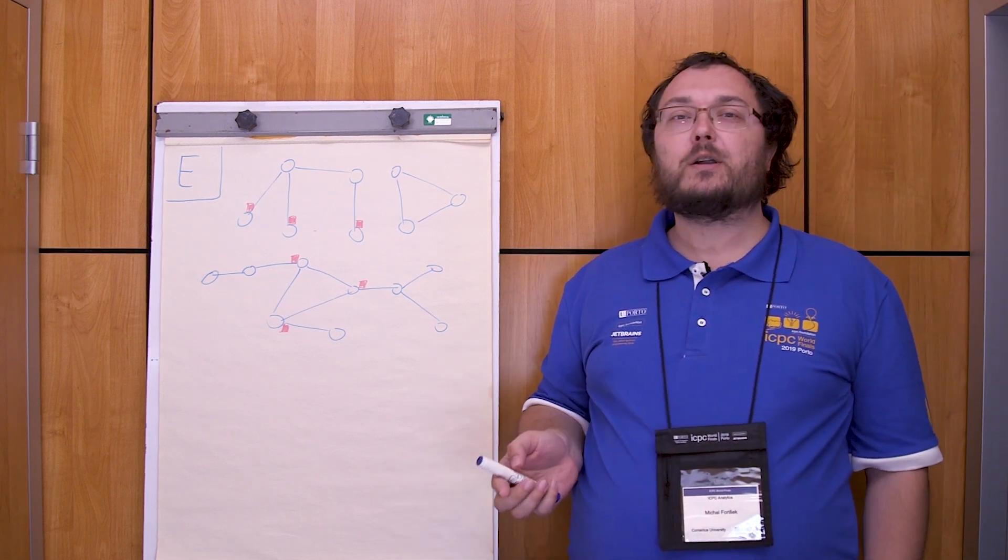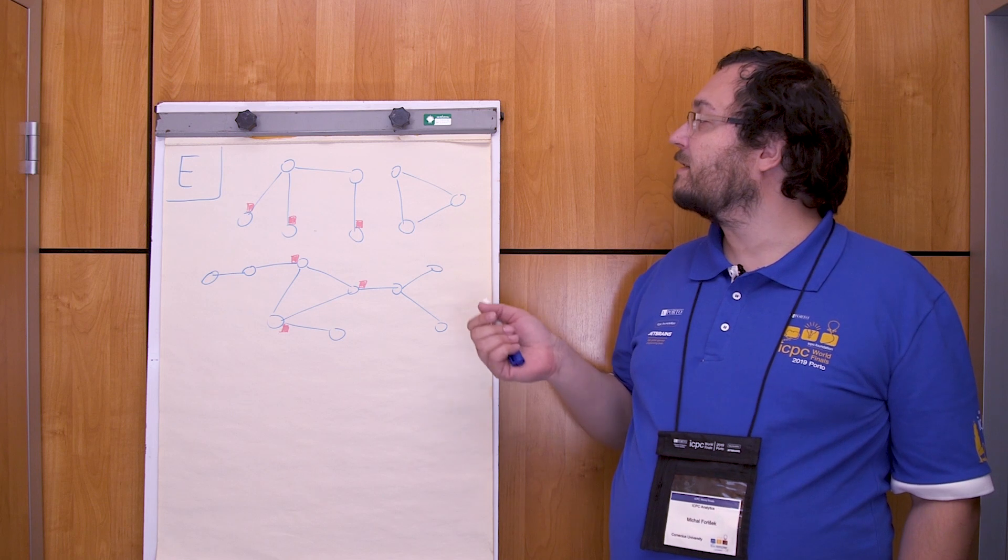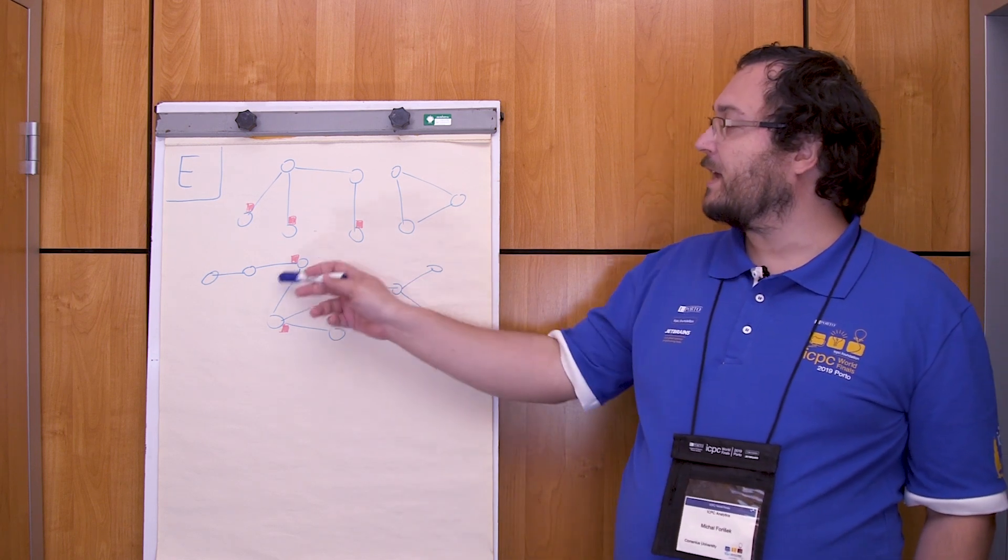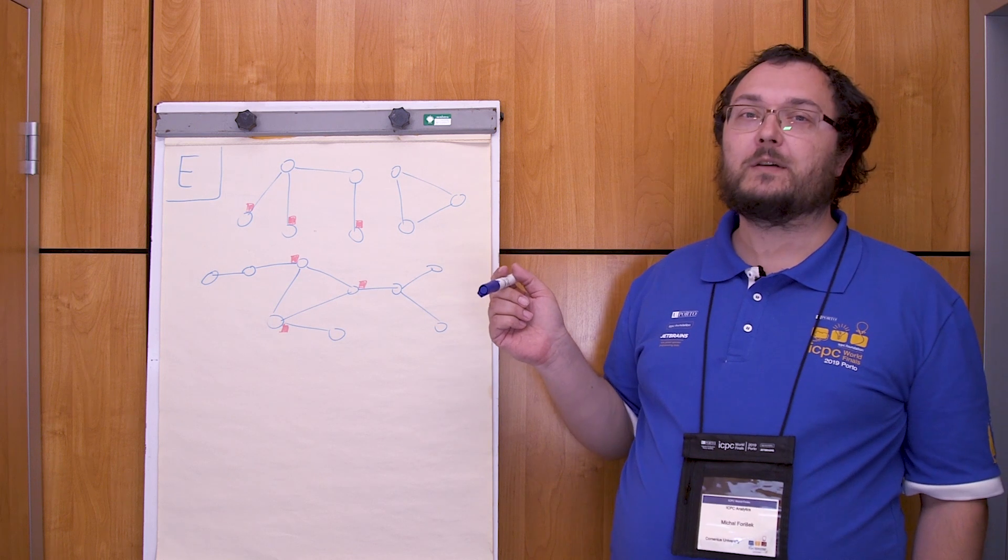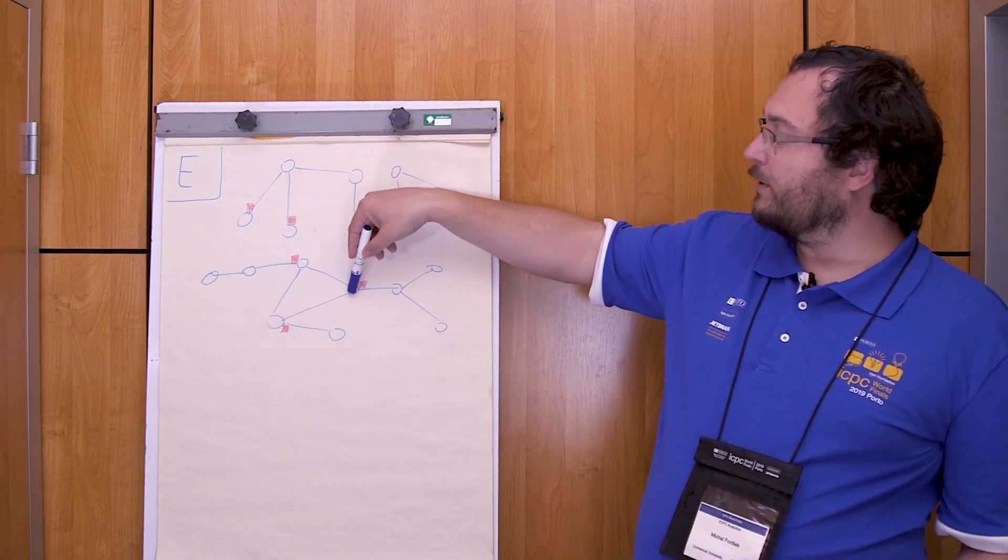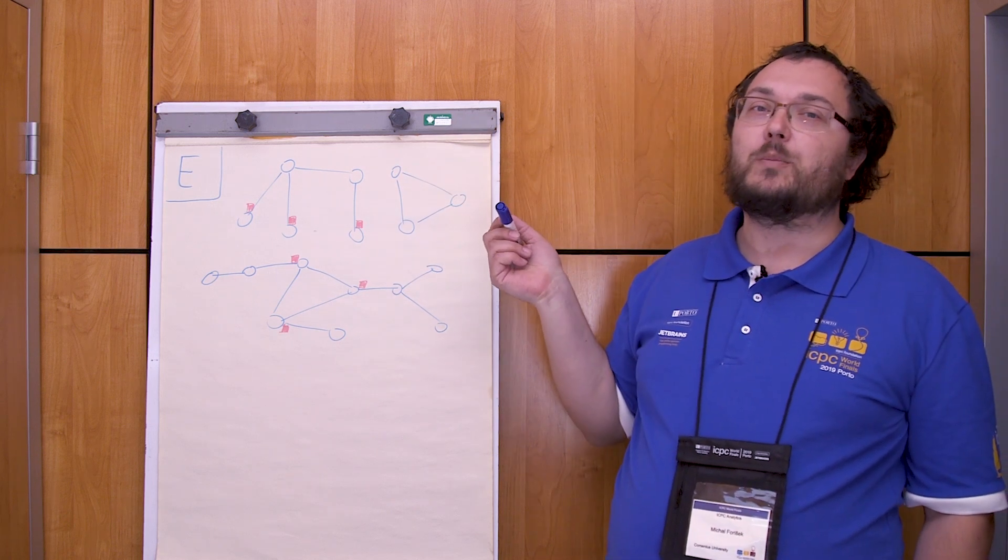This is clearly a graph theory problem and it has something to do with trees and cycles, because if you have a cycle somewhere you cannot have a dead-end because you can always drive to the cycle, drive around it, and then leave in the opposite direction.